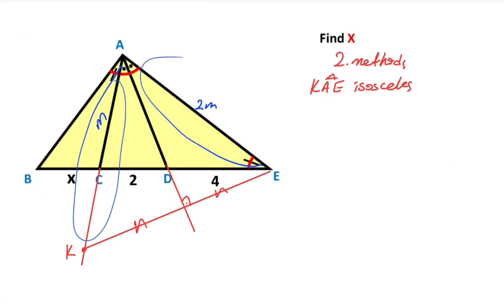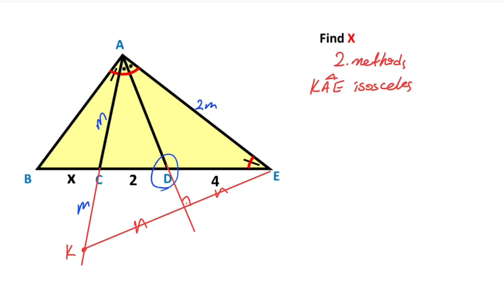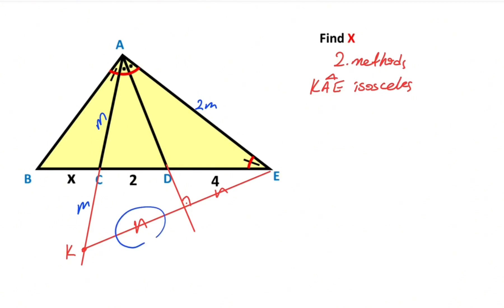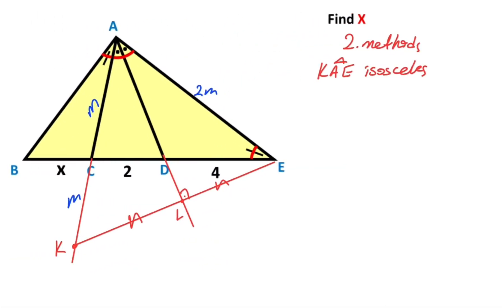If you focus on point D, notice that the ratio of these two sides equals 2, and these two parts are equal, and also these two parts are equal. That means point D is the centroid of triangle AKE.